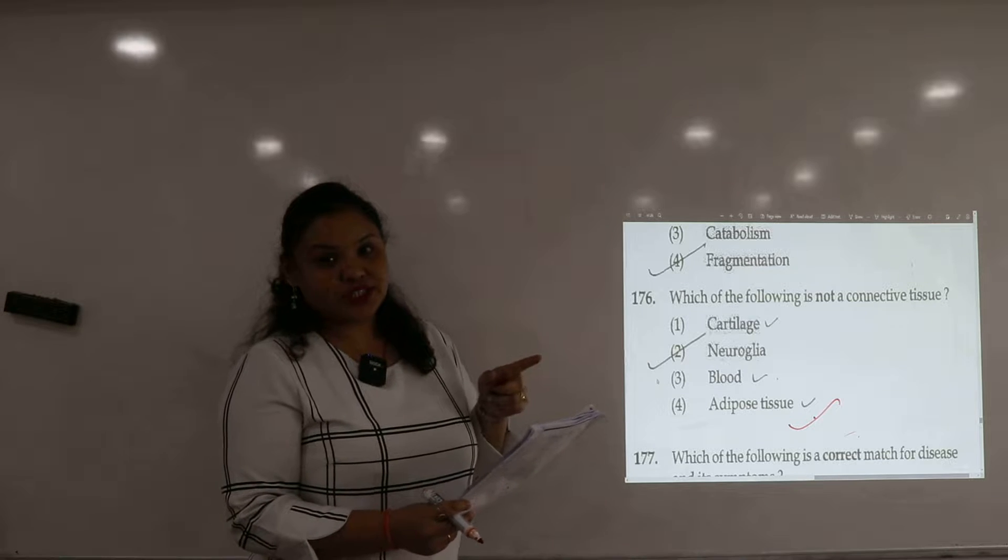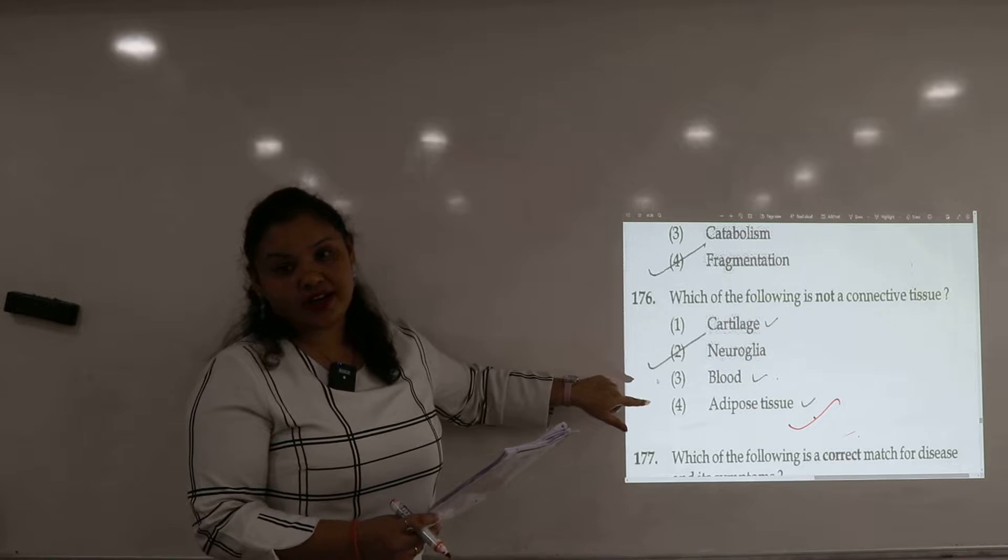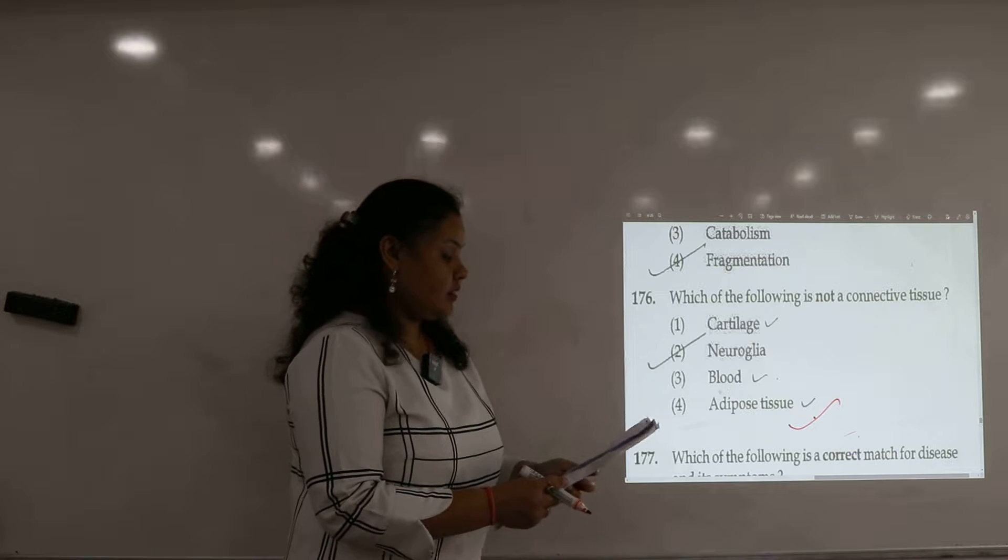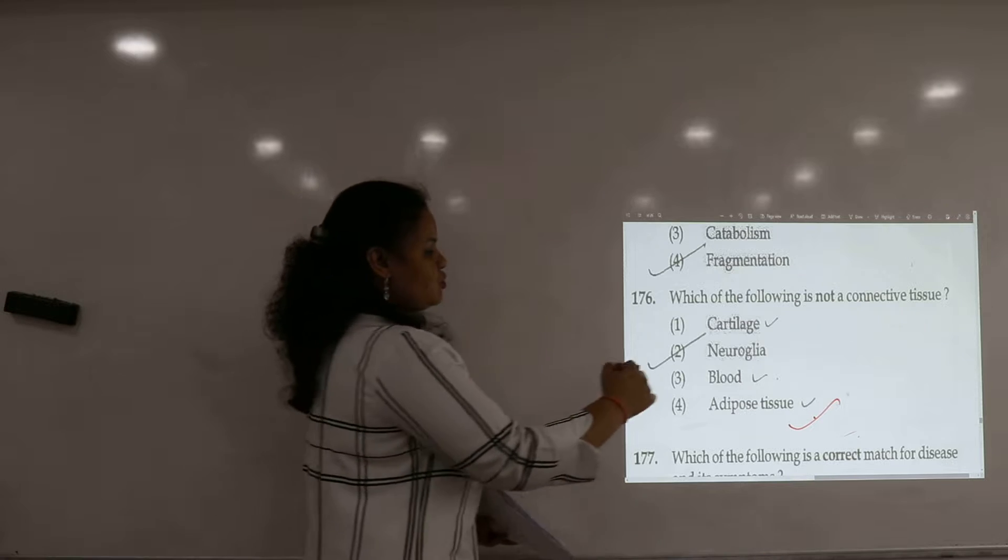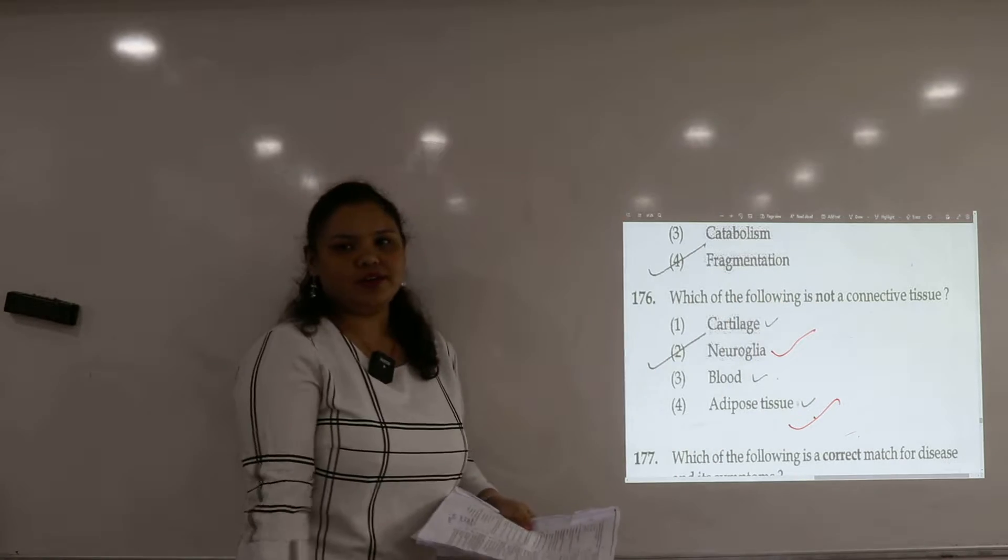Neuroglia is a nervous tissue. Blood is a fluid connective tissue and adipose tissue is loose connective tissue. So the answer will be neuroglia cells.